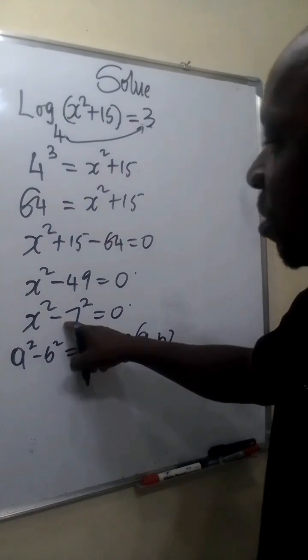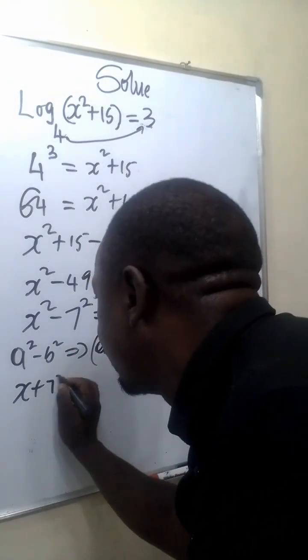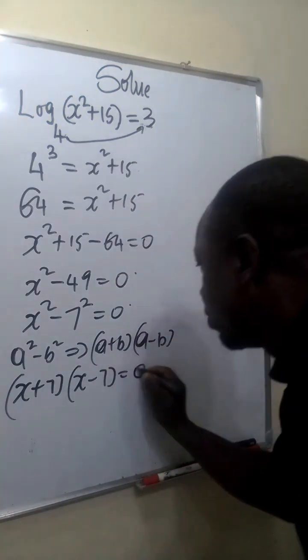We apply the same concept to solve this equation. So this becomes x plus 7 times x minus 7 equals 0.